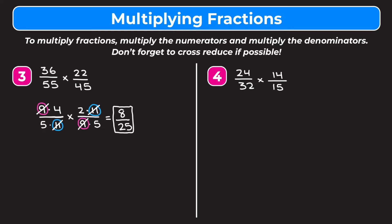Example 4 is 24 over 32 times 14 over 15. Before cross-reducing, notice that we can simplify 24 over 32 first. I always start by simplifying individual fractions if possible. Since 24 and 32 are both divisible by 8, I write 24 as 8 times 3 and 32 as 8 times 4, and leave 14 fifteenths as is. We can then cross out the 8 on top and bottom since it simplifies to 1.